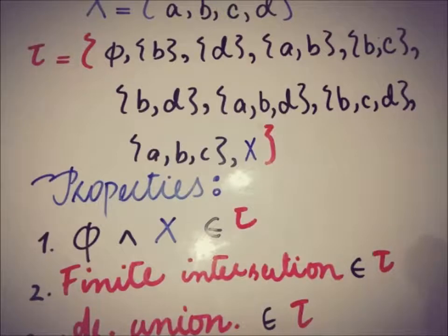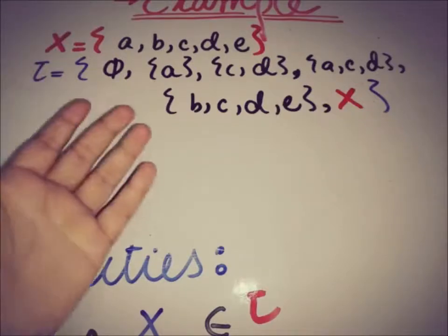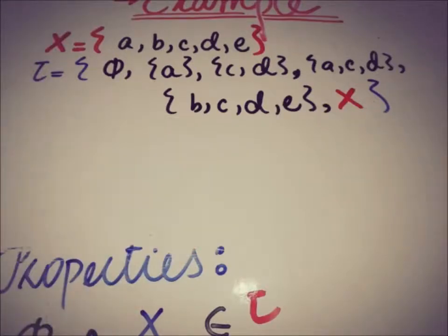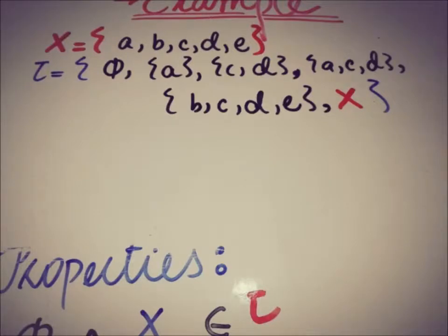The other example of topology is: now we have a space X containing a, b, c, d, e as elements, and the collection of subsets of X, that is τ, which is also a topology on X, has empty set, {a}, {d}, {c}, {a,c}, {d}, {b,c,d,e}, and the set X as well.